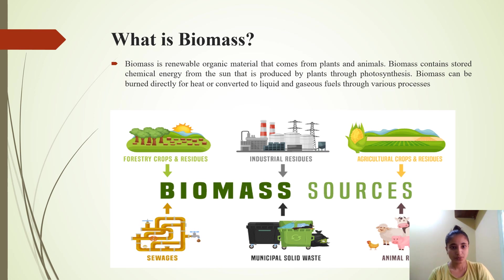Biomass can be burned directly for heat or converted to liquid and gaseous fuels through various processes. The sources of biomass include forestry crops and residues, industrial residues, agricultural crops and residues, animal residues, municipal solid waste, and sewage.